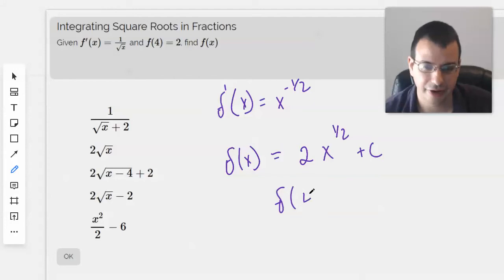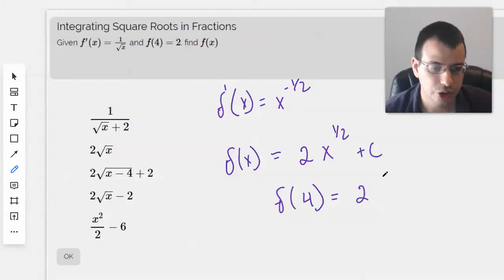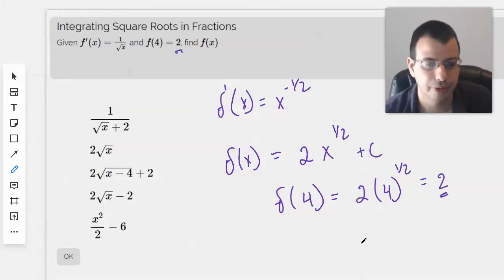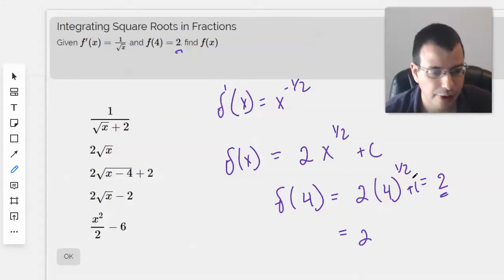And we know that f of 4 equals 2. So it'll be 2 times 4 square rooted equals 2, plus c. So 2 times, in this case 2, 4 square root is 2, plus c equals 2.